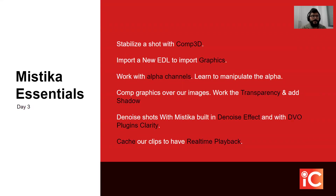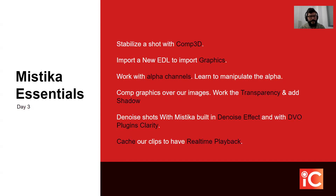We're going to stabilize shots in comp3D, import a new EDL to import graphics, work with alpha channels, learn to manipulate the alpha, comp graphics over our images, work the transparency, and add a shadow. Then we will quickly denoise shots with Mistika's built-in denoise effect and with DVO plugin's Clarity. Finally, we will learn how to cache our clips to have real-time playback and the ability to work in real time with clips that have had a heavy denoise effect applied.